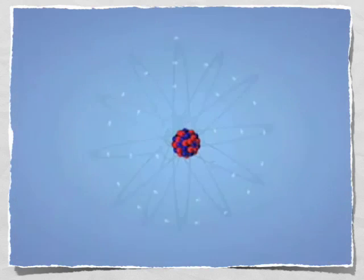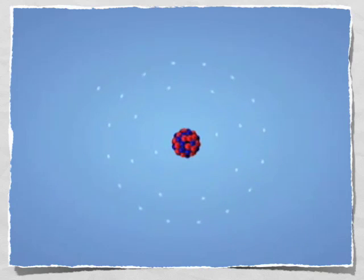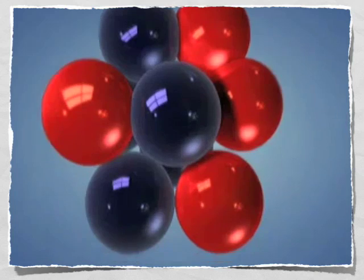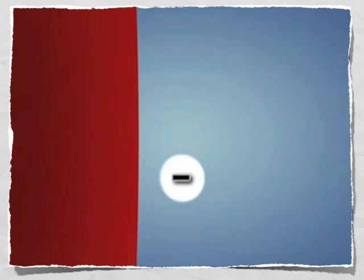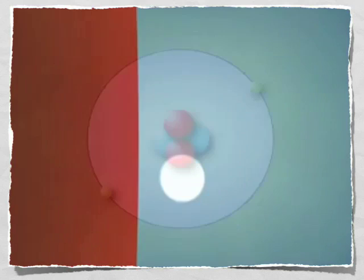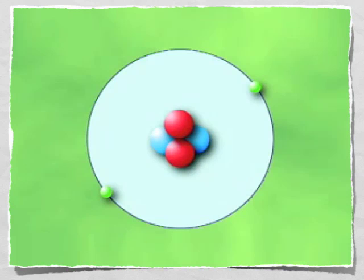While neutrons and protons are small, electrons found swirling around the nucleus are even smaller. In fact, electrons are approximately one-two-thousandth the mass of a proton or neutron. While electrons are extremely small, they do have a charge — a negative charge. In atoms with an overall neutral charge, the number of electrons equals the number of protons.